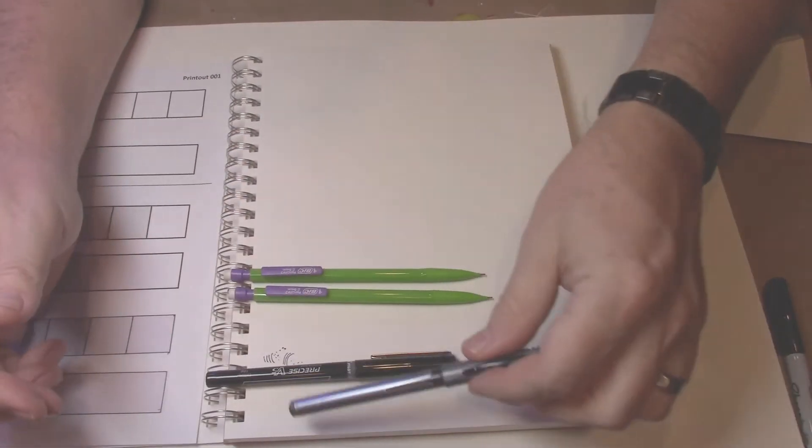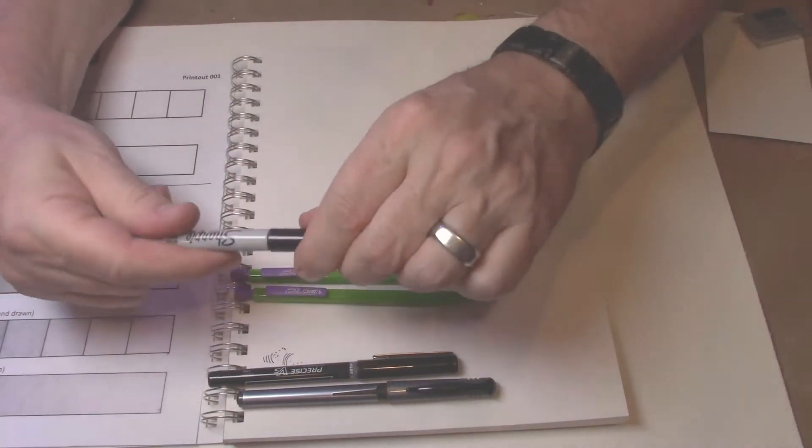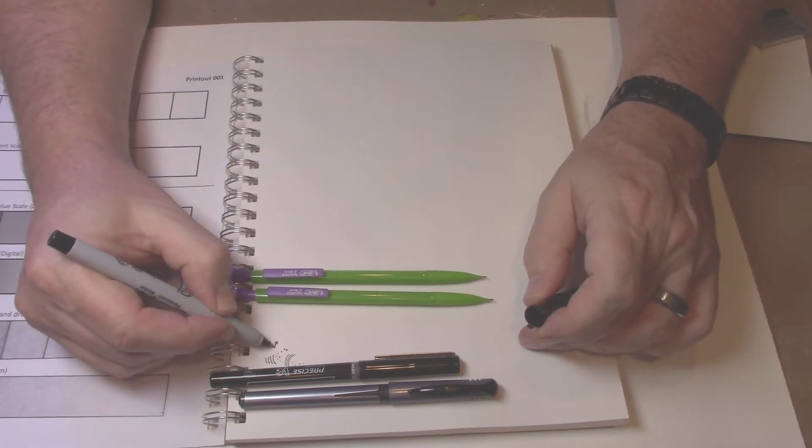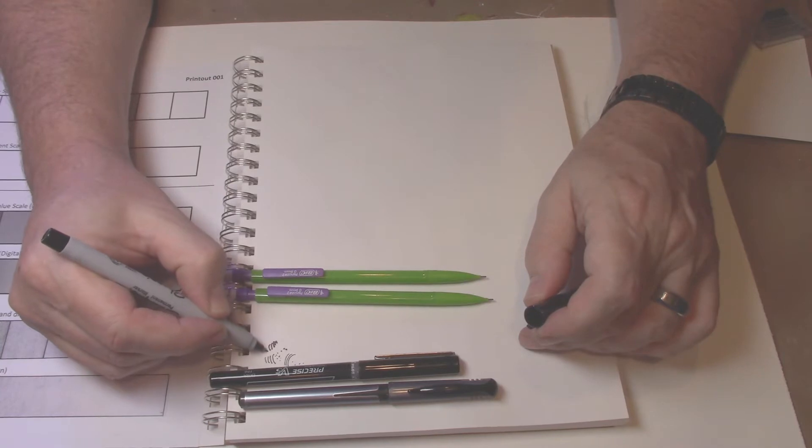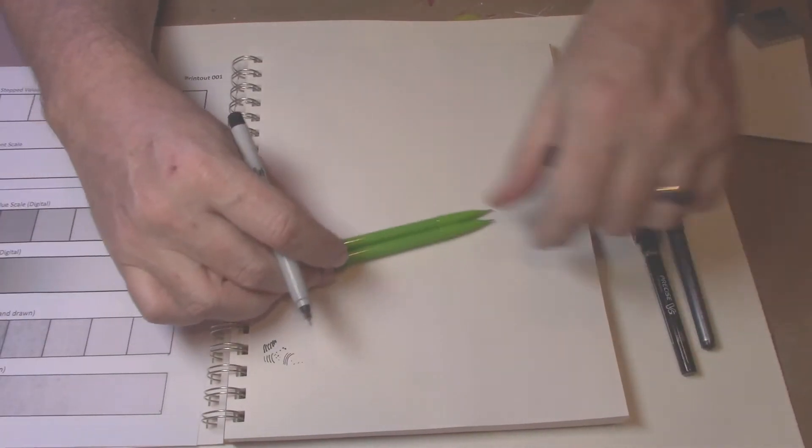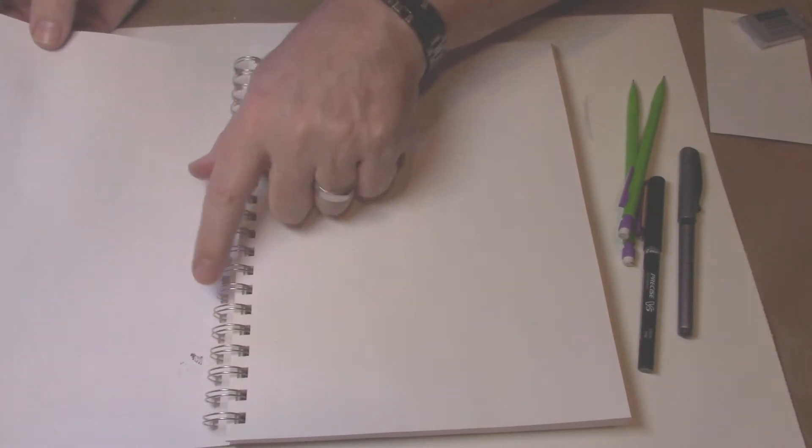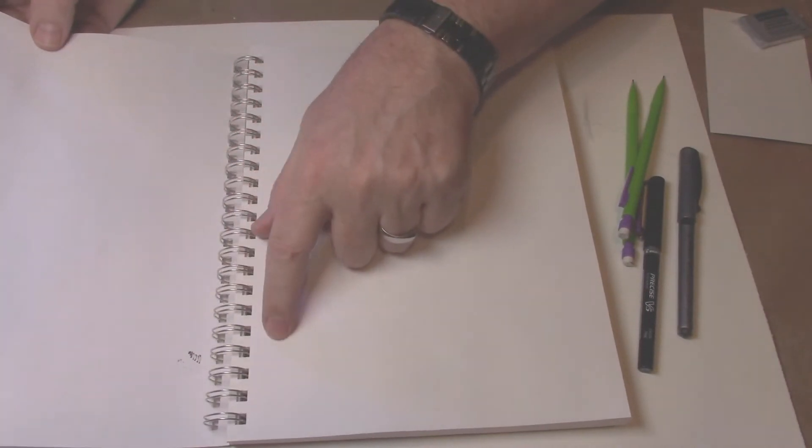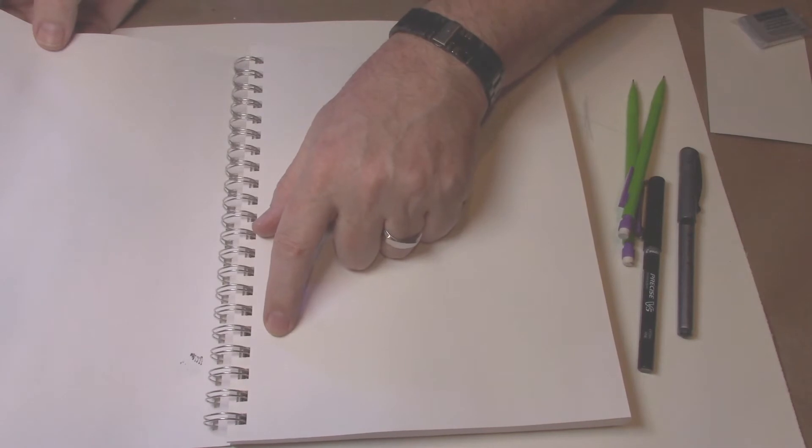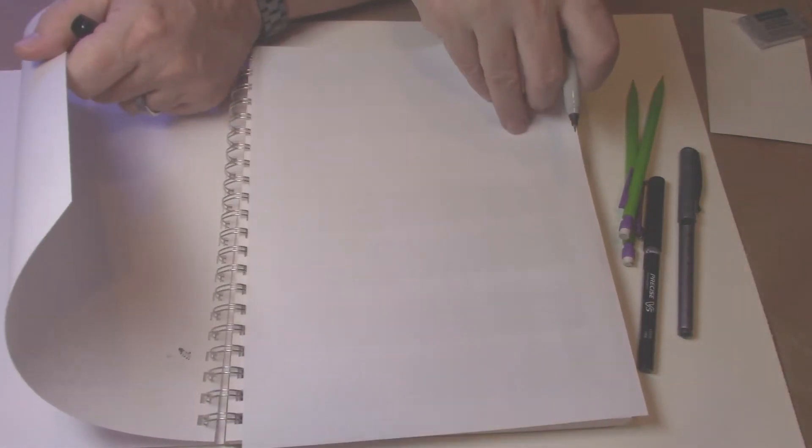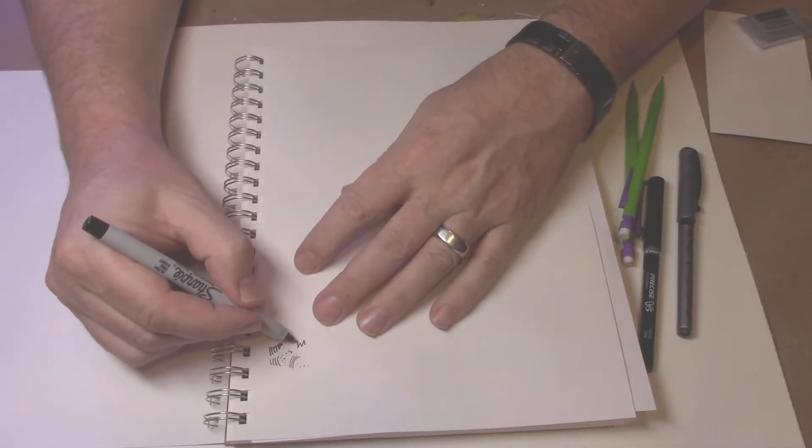So you can use the Ultra Fine Sharpie. The only problem with this is that the ink in here is a little thinner. So what will tend to happen is that it will bleed through to the other side. If you do use this, you have to remember to put a sheet of paper. Otherwise, it will go down through the next page and it will stain that page. So I'm going to put this here just as protection and then I can draw on this.